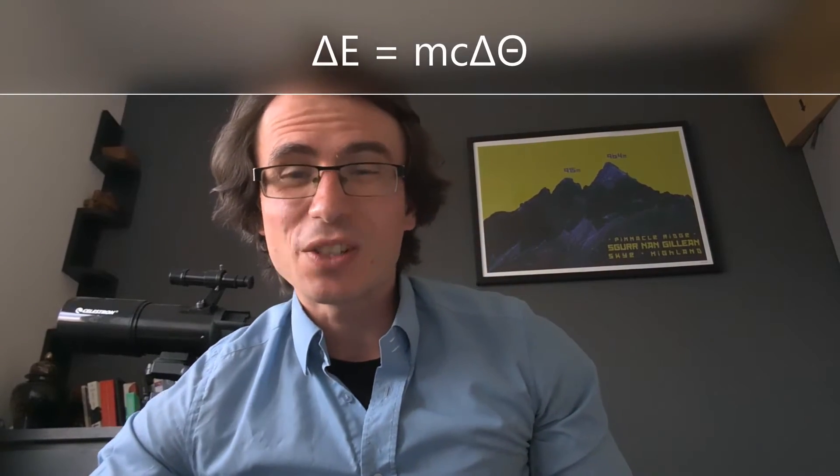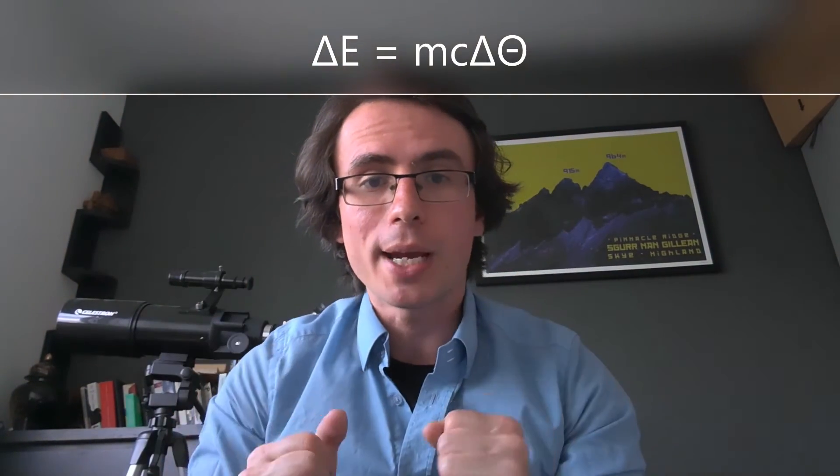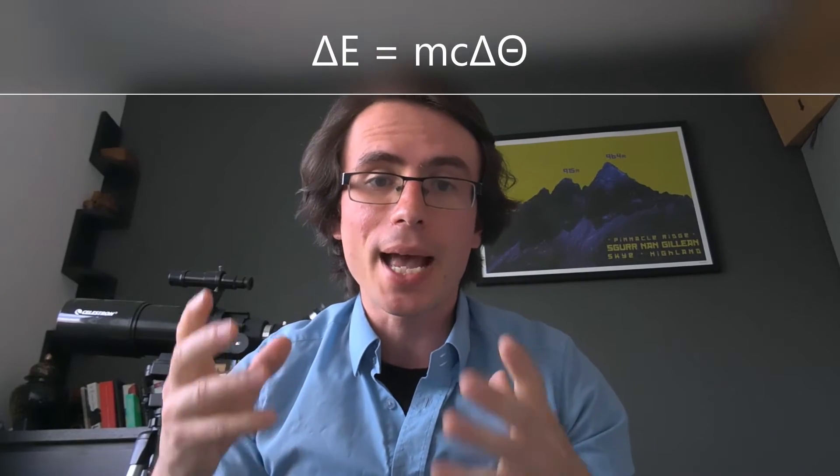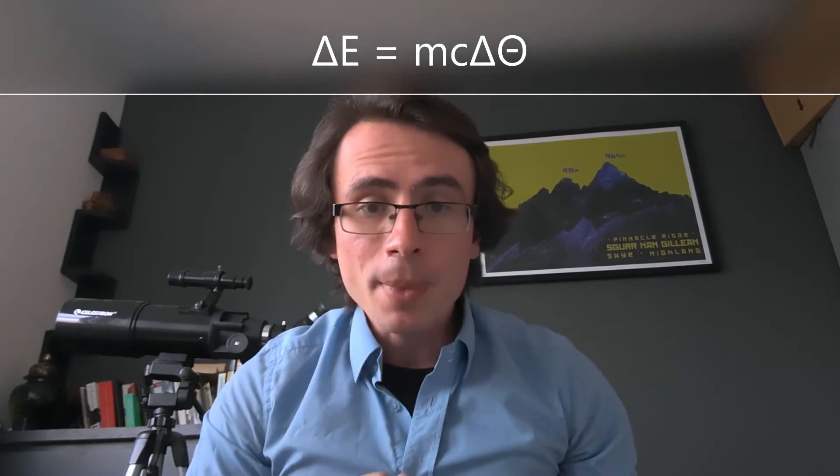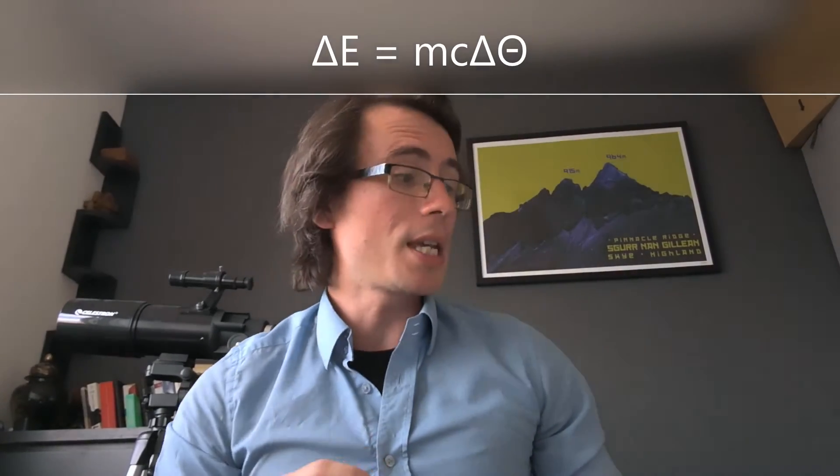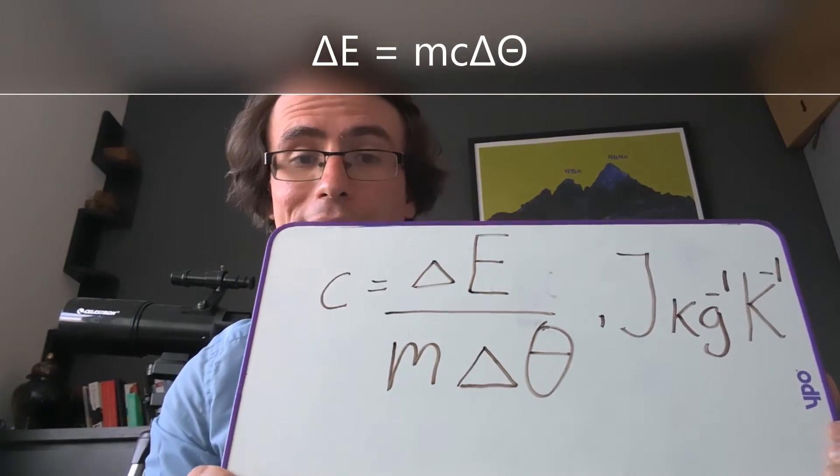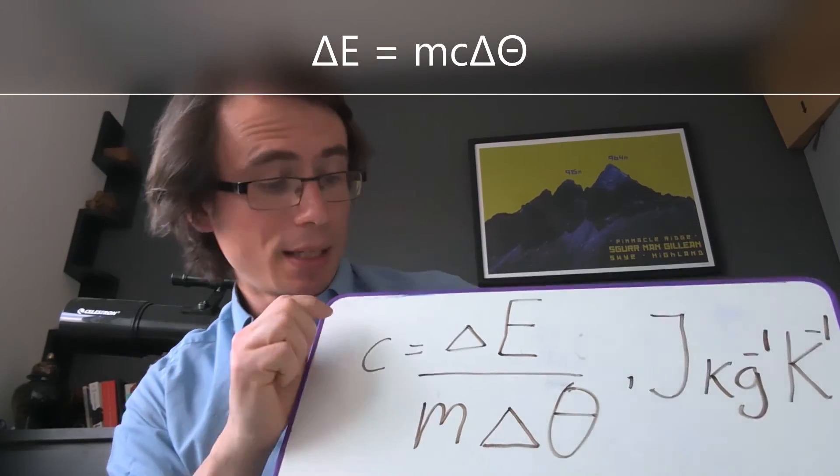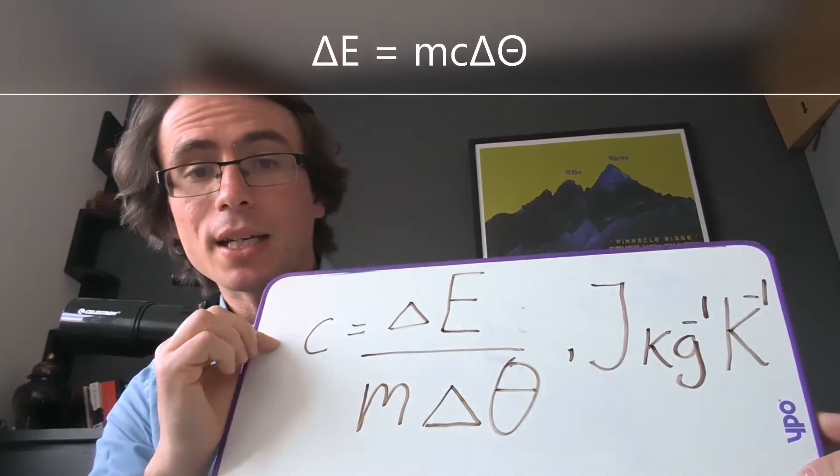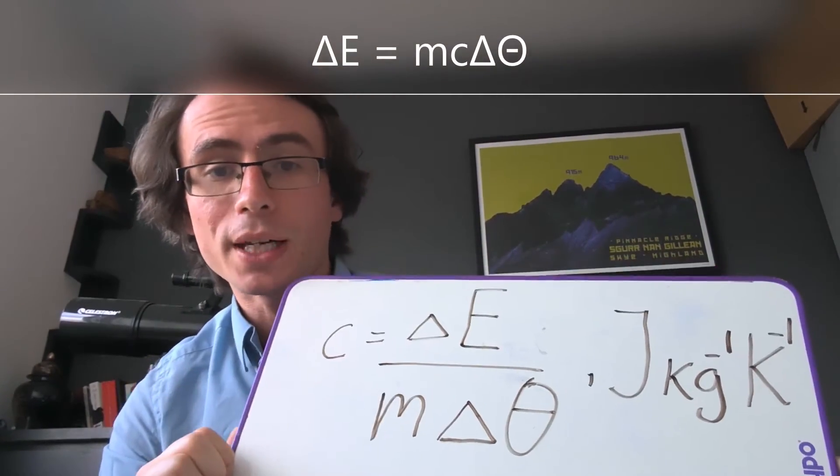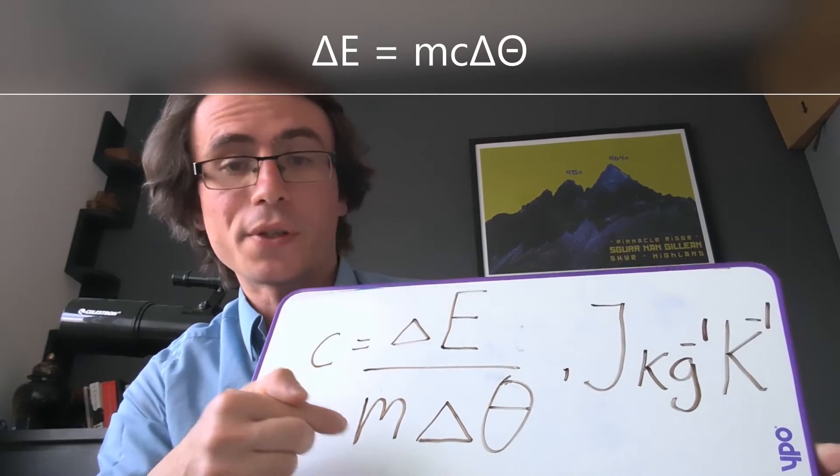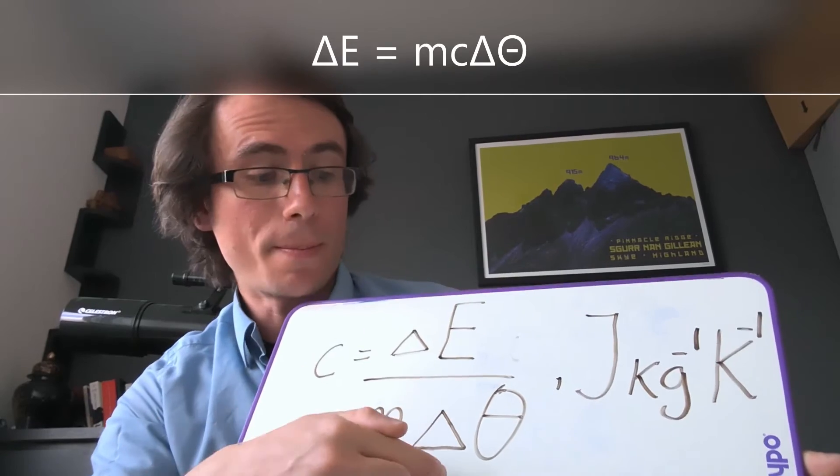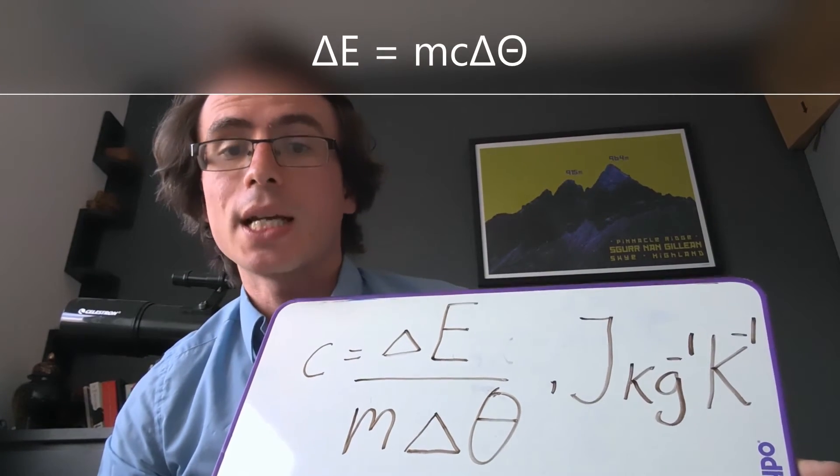The other fact that is really important in this equation is the specific heat capacity of a substance given the letter C. I've rearranged the equation for the specific heat capacity, and we can see that the specific heat capacity is really defined as the amount of energy required to raise the temperature of, say, one kilogram by one degree Kelvin.